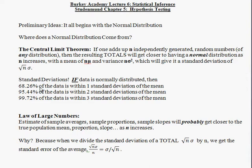The central limit theorem says that if you add up independently generated random numbers, the resulting totals will follow a normal distribution. The law of large numbers is sometimes confused with this central limit theorem. The central limit theorem just tells us the shape of a distribution will be normal if you have a large sample size and you add things up.